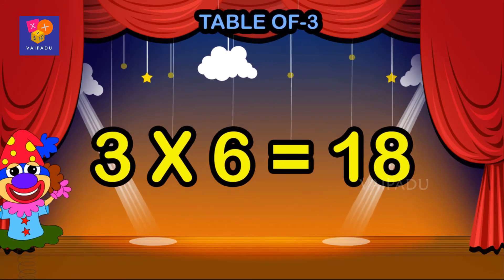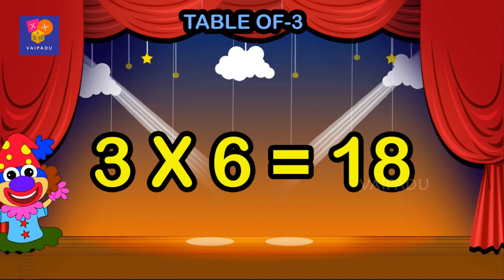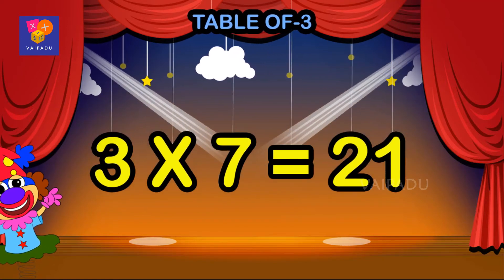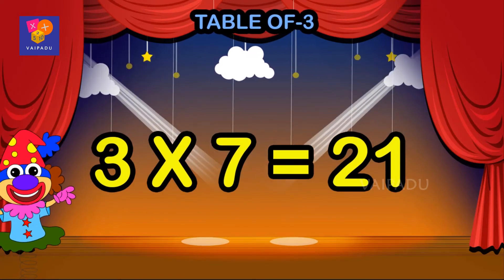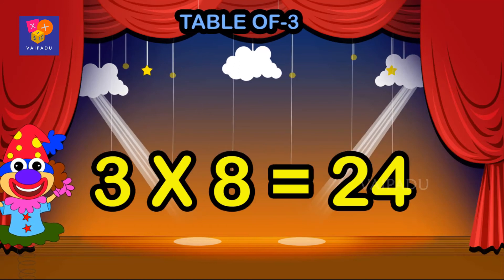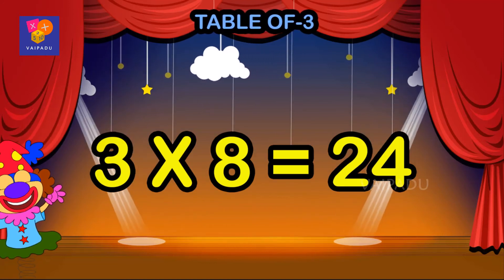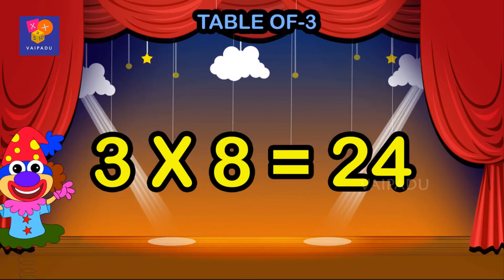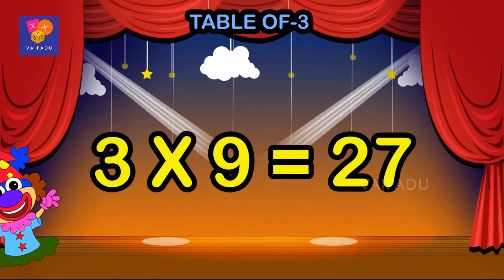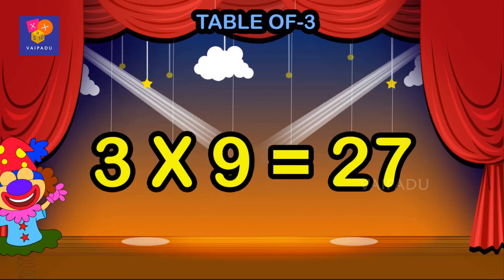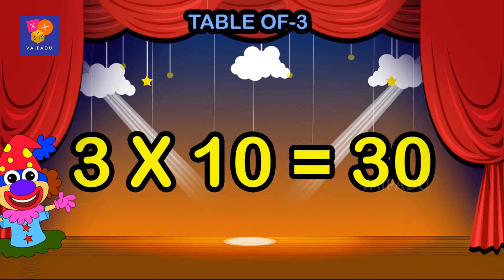Three sixes are eighteen, three sevens are twenty one, three eights are twenty four, three nines are twenty seven, three tens are thirty.